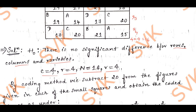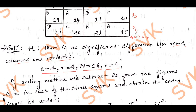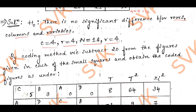Looking at the given data, I have noted down the values of C, R, N, B. This problem can be done by a coding method or non-coding method. I am first solving by the coding method; in future I will solve the same problem without the coding method as well. You can use whichever method you feel comfortable with. By the coding method, we subtract, divide, multiply, or add a constant. Here I am subtracting 20 from each value.